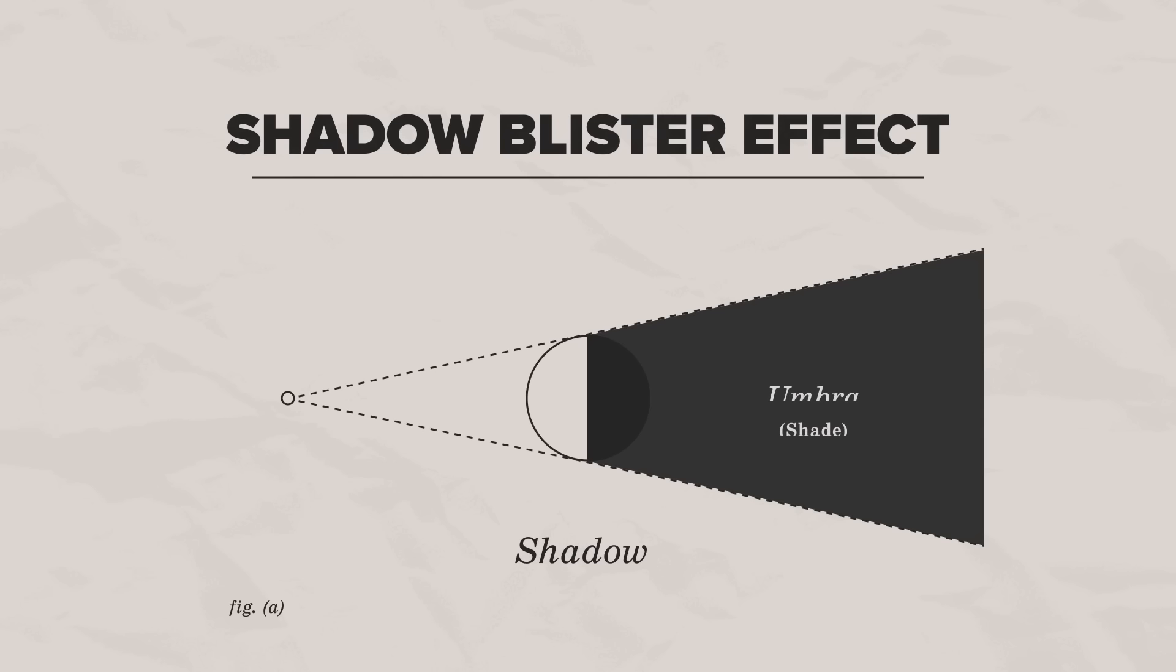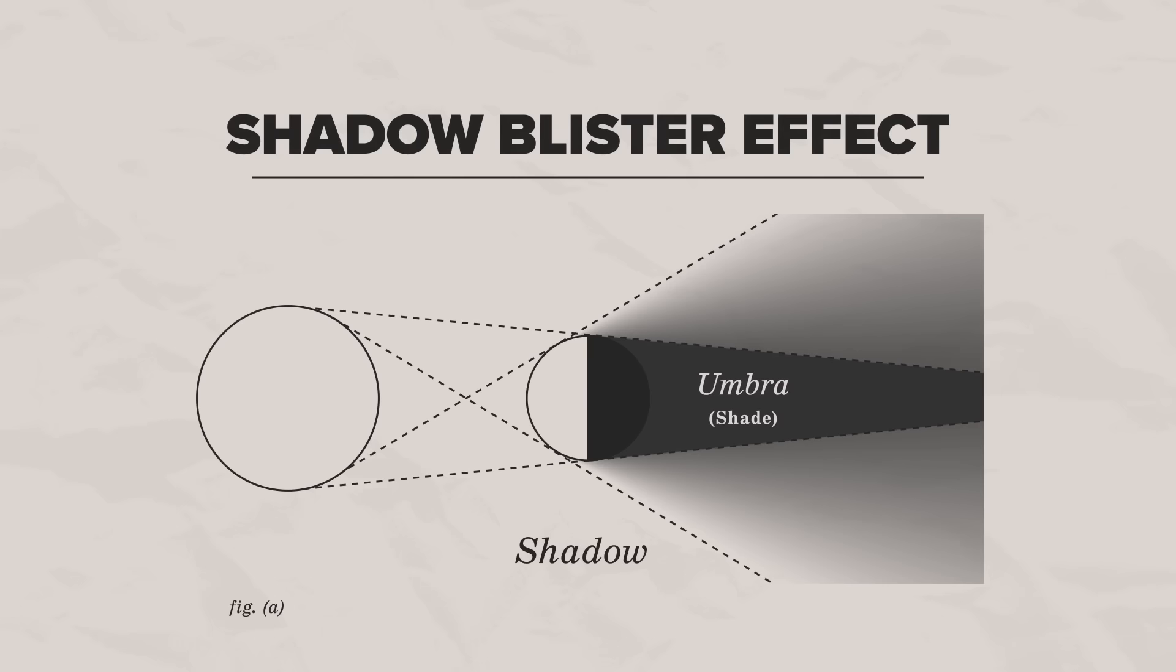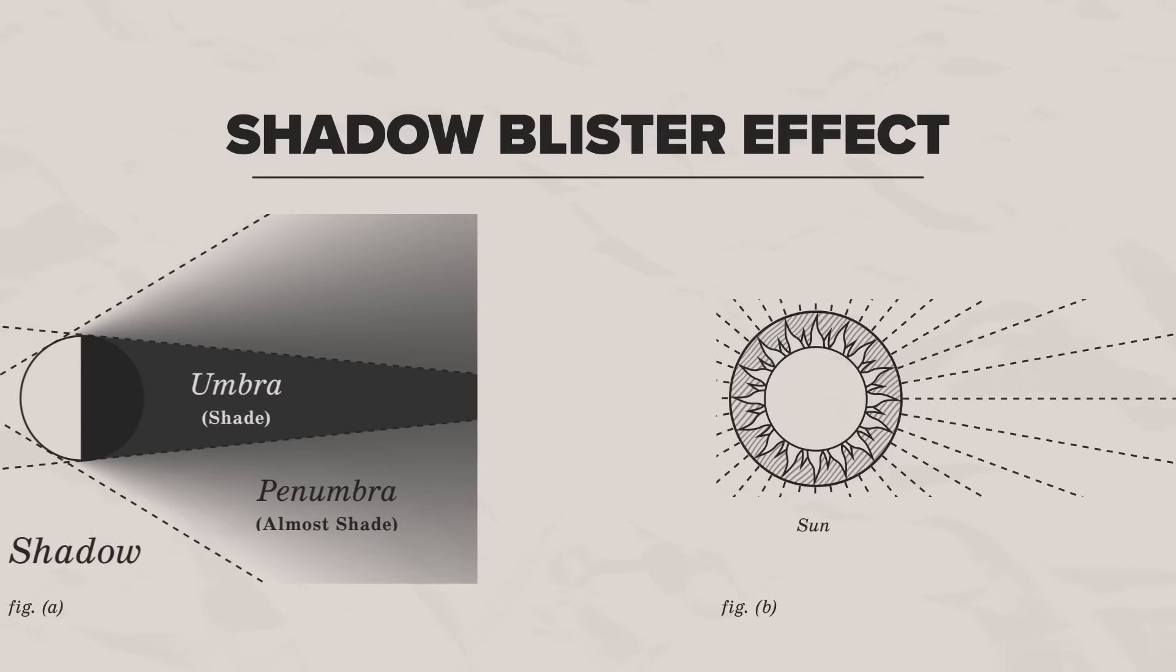The darkest part of a shadow, where an object completely blocks the source of light, is called the umbra. This is the familiar dark part we'd typically call the shadow. But around the edges, where only part of the light is blocked by an object, we have the hazier penumbra.